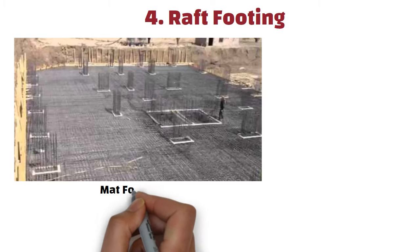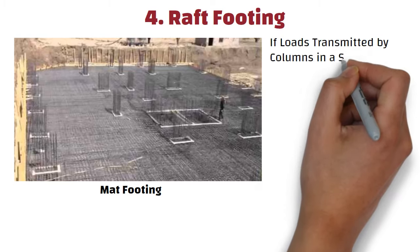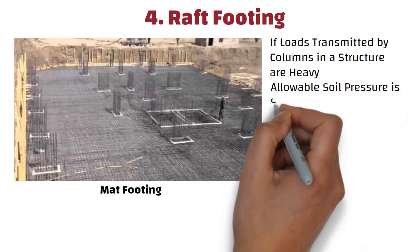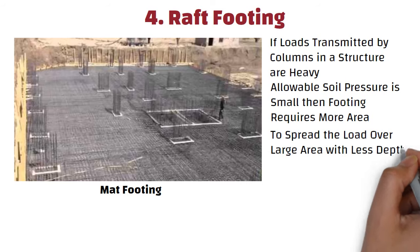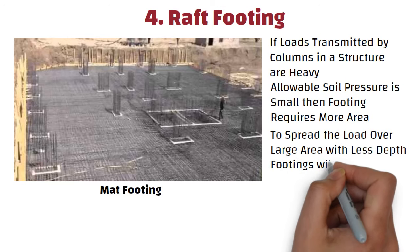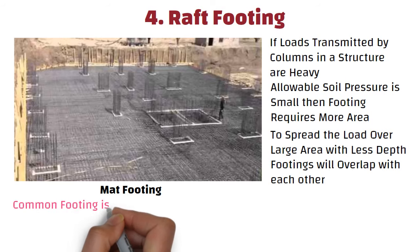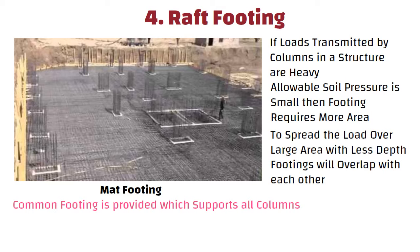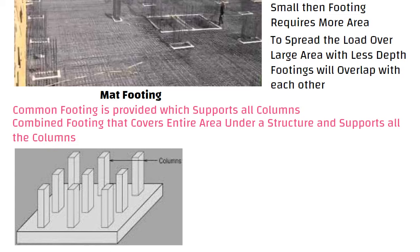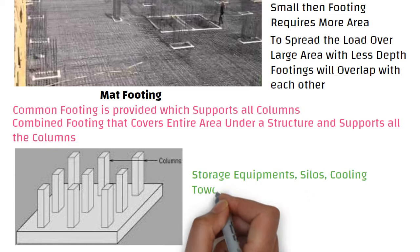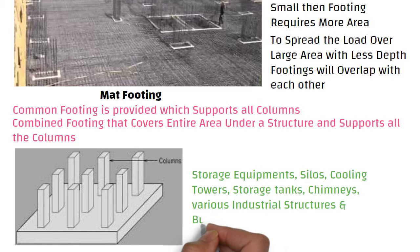The raft footing is also called mat footing. If loads transmitted by the columns in a structure are heavy and the allowable soil pressure is small, then the footing requires more area. So in order to spread the load over a large area with less depth, we have to increase the footing area. And in this case, if we plan to go with individual footings, they will overlap with each other. So to avoid this, a common footing is provided which supports all the columns — such footing is called raft footing. Raft footing covers the entire area under a structure and supports all the columns. It is used to support storage equipment, silos, cooling towers, storage tanks, chimneys, various industrial structures, and buildings with basements where continuous waterproofing is needed.